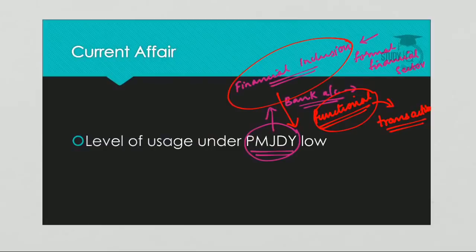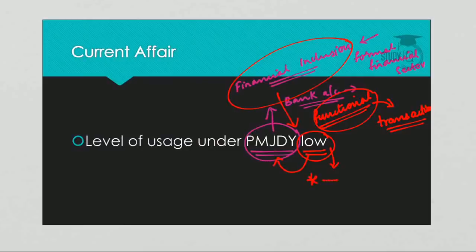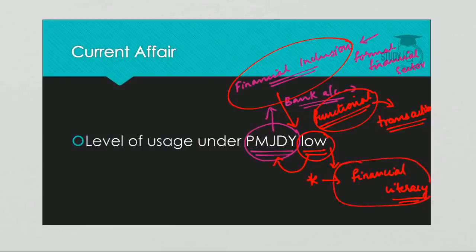What is the problem here? Pradhan Mantri Jan Dhan Yojana has ensured almost near universal access to bank accounts, but the level of usage of these accounts remains very low. One significant factor identified for this lower usage is financial illiteracy — that means there is a lack of financial literacy among the masses. In this lecture, we will see what is financial inclusion, what is financial literacy, and what is the role of financial literacy in improving financial inclusion.